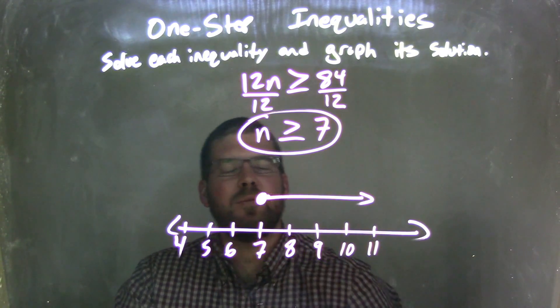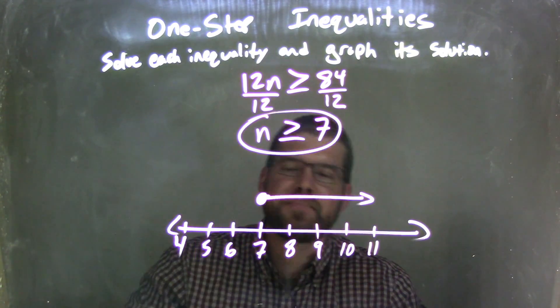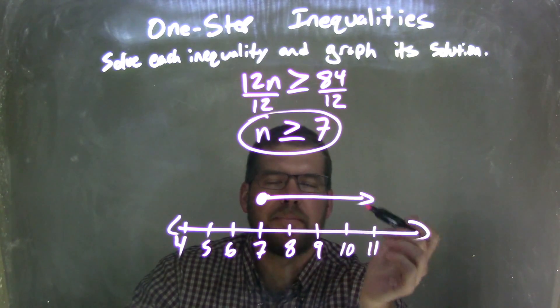And it matches my final answer, which was n is greater than or equal to 7. And this graph represents all values that n can be.